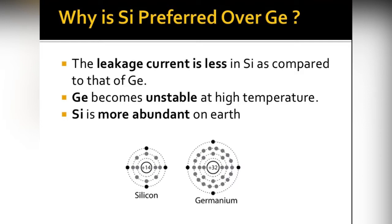The atomic number of silicon is 14 and the atomic number of germanium is 32. The electron configuration of silicon is 2, 8, 4 (K, L, M shells) and for germanium it is 2, 8, 18, 4. In silicon, the outermost orbit with four electrons is the third shell, while in germanium it is the fourth shell. Therefore, the distance from the nucleus is greater in germanium than in silicon.